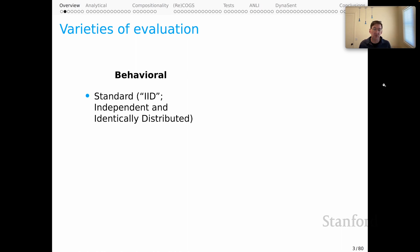Standard evaluations are often called IID evaluations for independent and identically distributed. The intuition here is that we have some test examples that are disjoint from the ones the system was trained on, but we have a kind of underlying guarantee that the test examples are very much like those that were seen in training. So this standard mode gives us a lot of guarantees about what we can expect at test time, but it is also very friendly to our systems.